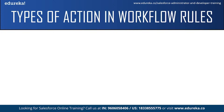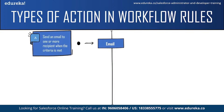The first action is sending emails. You can automate a workflow rule to send emails to one or more recipients when the criteria is met. For example, when a sales representative successfully closes a deal and updates the sales record, an email can be automatically sent to the sales team manager informing them that the sale was done.